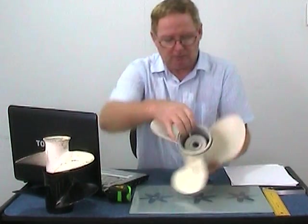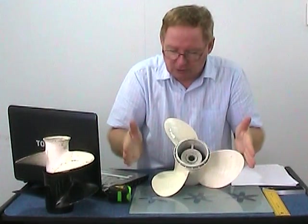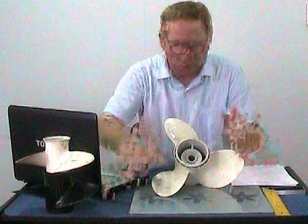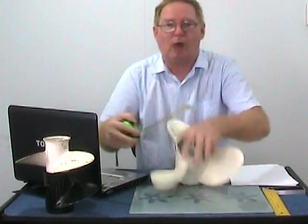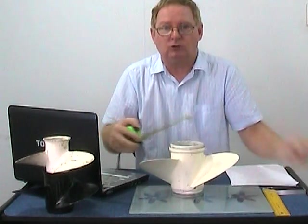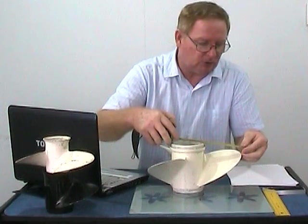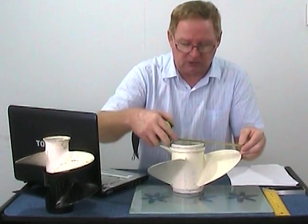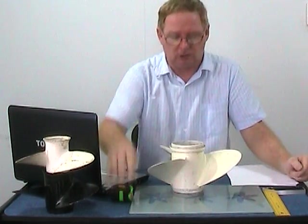Now, measuring the propeller diameter is a bit tricky on a 3 blade because if it was a 4 blade, we could measure from tip to tip. With a 3 blade, we can't measure from tip to tip. So we'd measure the radius being 2 times the radius equals the diameter. So we go from the center to the tip and that's 6.5 inches which gives us 13 inch overall diameter.